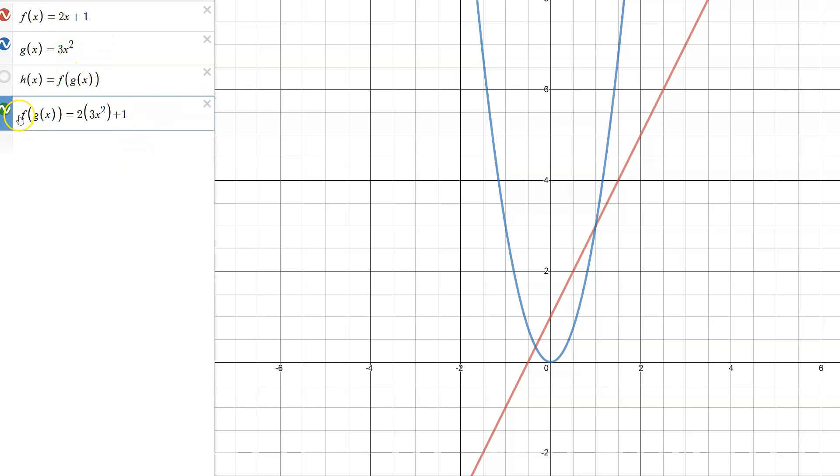If we take a look at the graph, we should be able to chase down some inputs and outputs. If I were to ask you what is h of one, it's telling us seven because of this rule here. From the algebra you could see it's two times three times one plus one will give me seven.